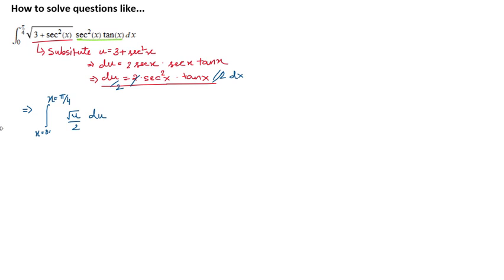This is a simpler integration, right? So, let us do this one. It is 1 over 2, integral of root u, square root u, du from x equals 0 to x equals pi over 4.